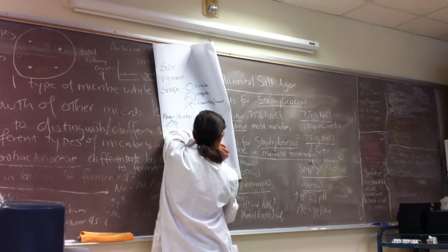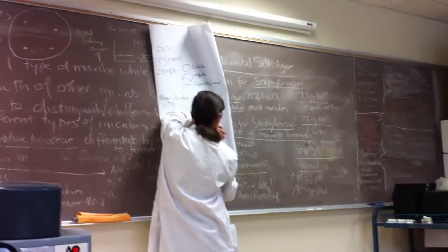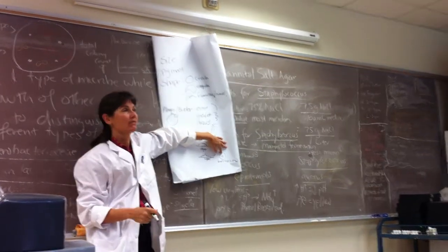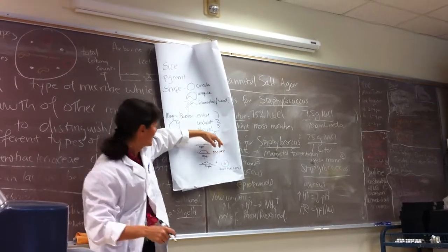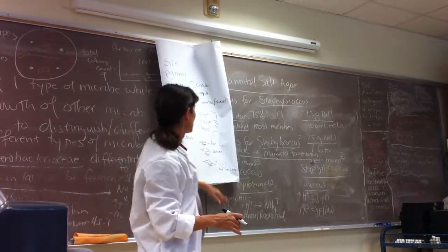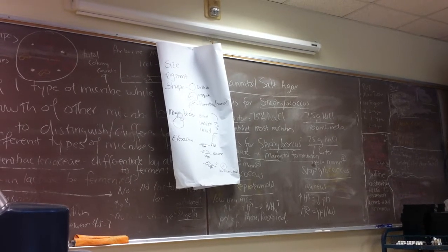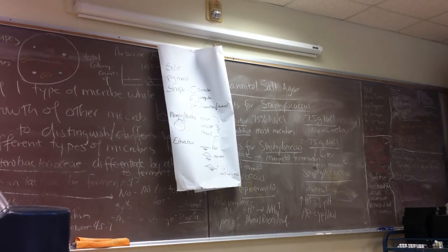So if you're looking down on it, umbonate looks like a little fried egg. A little yolk in the middle. So those are all the elevations we'll use. And don't spend too much time worrying about elevation.